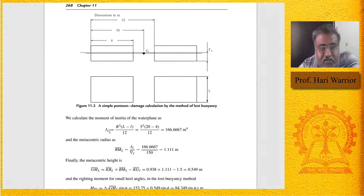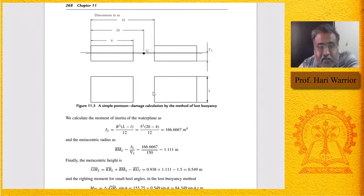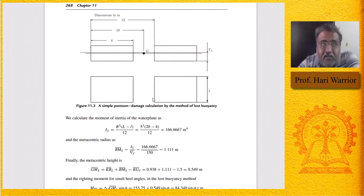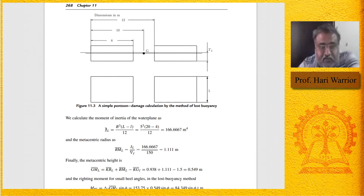The moment of inertia of the water plane for the flooded condition becomes: I_L = L × B³/12 − l × B³/12, which can be written as (L − l) × B³/12. Capital L is the length of the pontoon, small l is the length of compartment two (the broken/flooded part). So the moment of inertia I_L = (L − l) × B³ / 12.